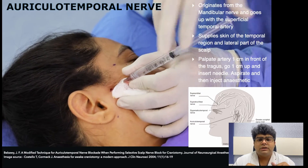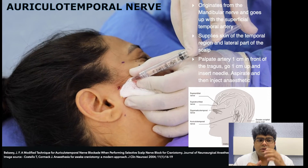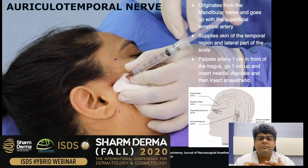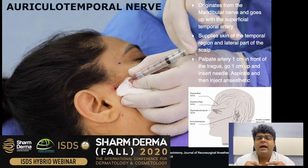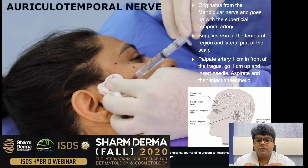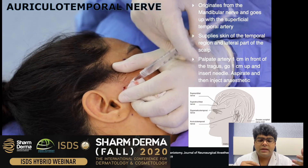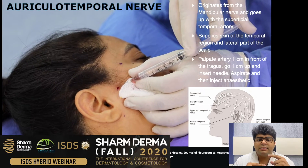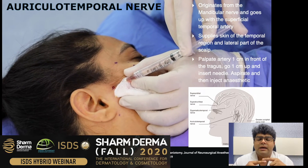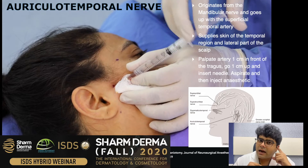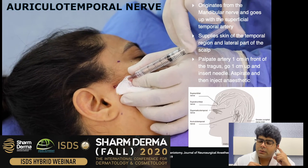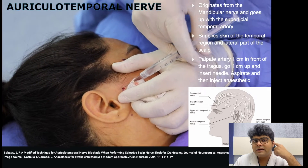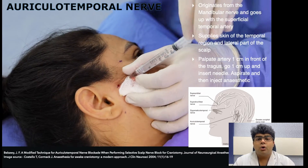The auriculotemporal nerve is the next one to cover. The nerve originates from the mandibular nerve immediately below the foramen ovale in the infratemporal fossa and has multiple roots. It supplies the skin of the temporal region. To inject it, we palpate the artery near the angle and palpate in front of the tragus, go inside, and behind the artery is where we infiltrate the local anesthesia.